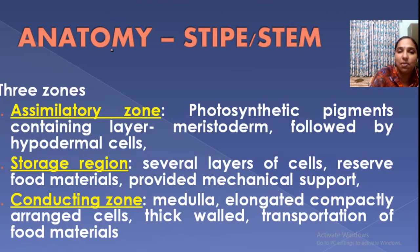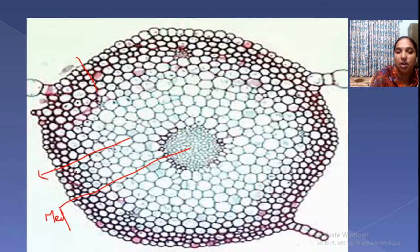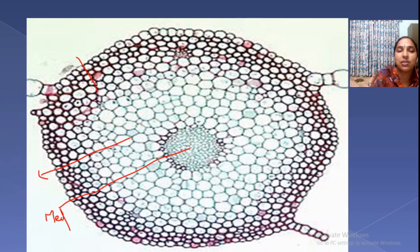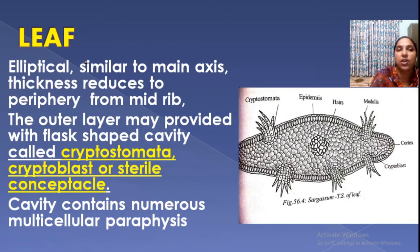The assimilatory zone is the outermost layer, the storage region is the middle, and the medulla is the conducting region at the center. The meristoderm is the outermost layer and is assimilatory or photosynthetic in function.